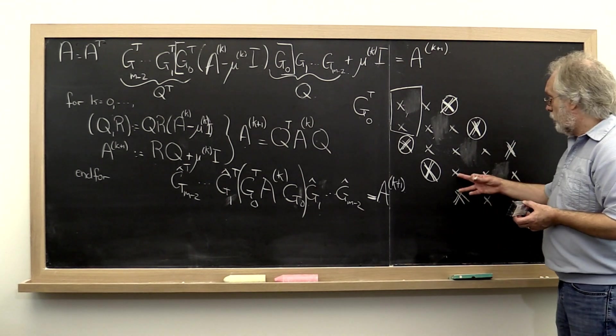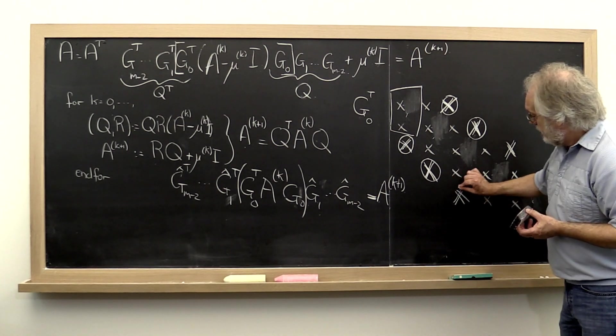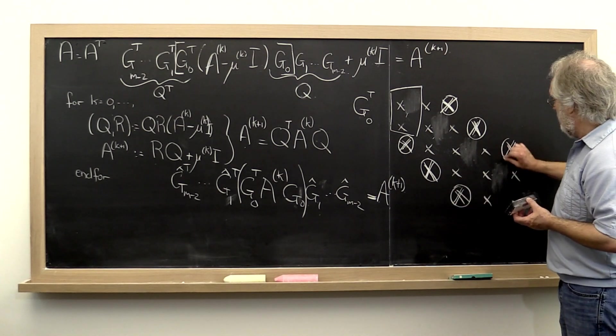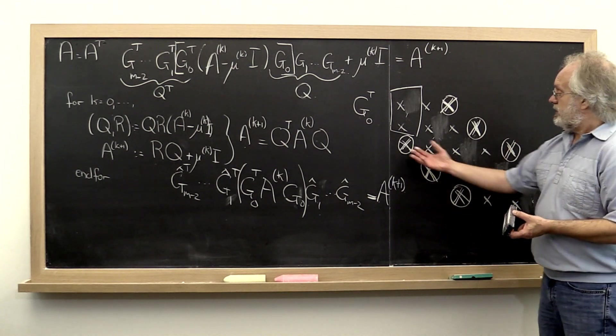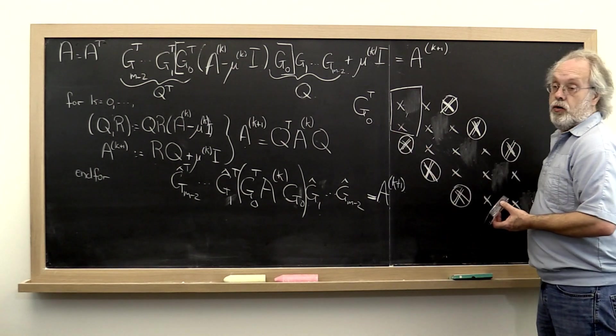And then we create one final Givens rotation to introduce zeros here and here, applying from the left and the right. And what we've done is we've moved this nonzero out.